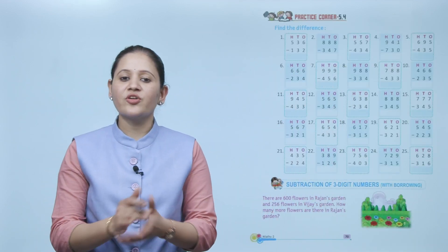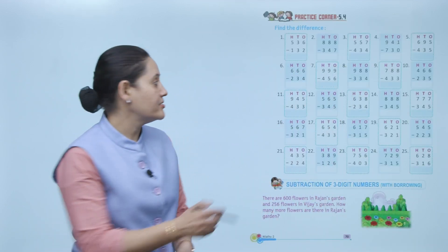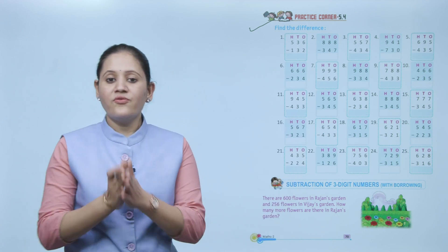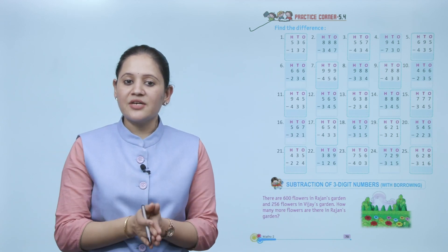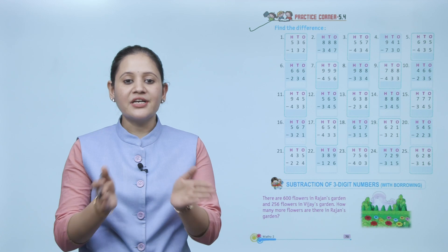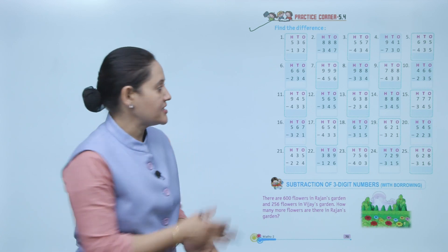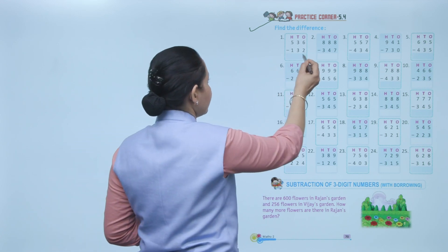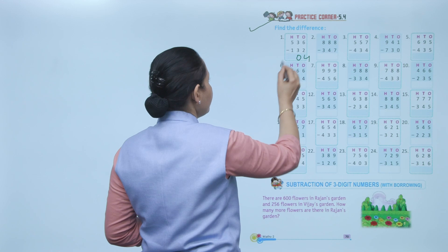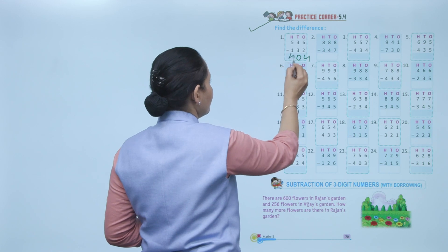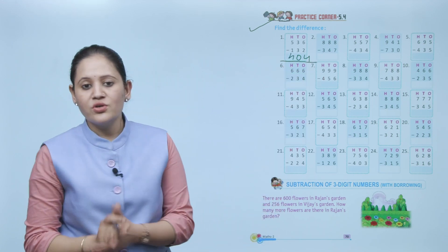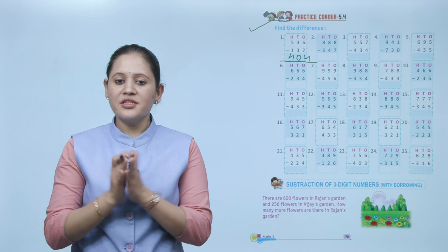Practice corner 5.4 — find the difference. We have to subtract 132 from 536. Ones: 6−2=4. Tens: 3−3=0. Hundreds: 5−1=4. The difference is 404. You have to practice all the sums.